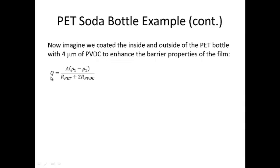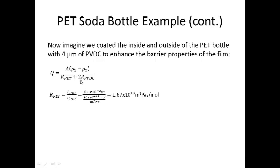Now let's imagine we coated the inside and outside of the PET soda bottle with four microns of PVDC to enhance the barrier properties of the film. In this case, we have to use the non-homogeneous or multilayer film equation for mass flow rate, where I have the area of the soda bottle as calculated previously, times the pressure difference across the multilayer film of the soda bottle wall, divided by the resistance of the PET plus two times the resistance of the PVDC. And it's two times the resistance because we have two layers of PVDC — one on the inside of the bottle and one on the outside.